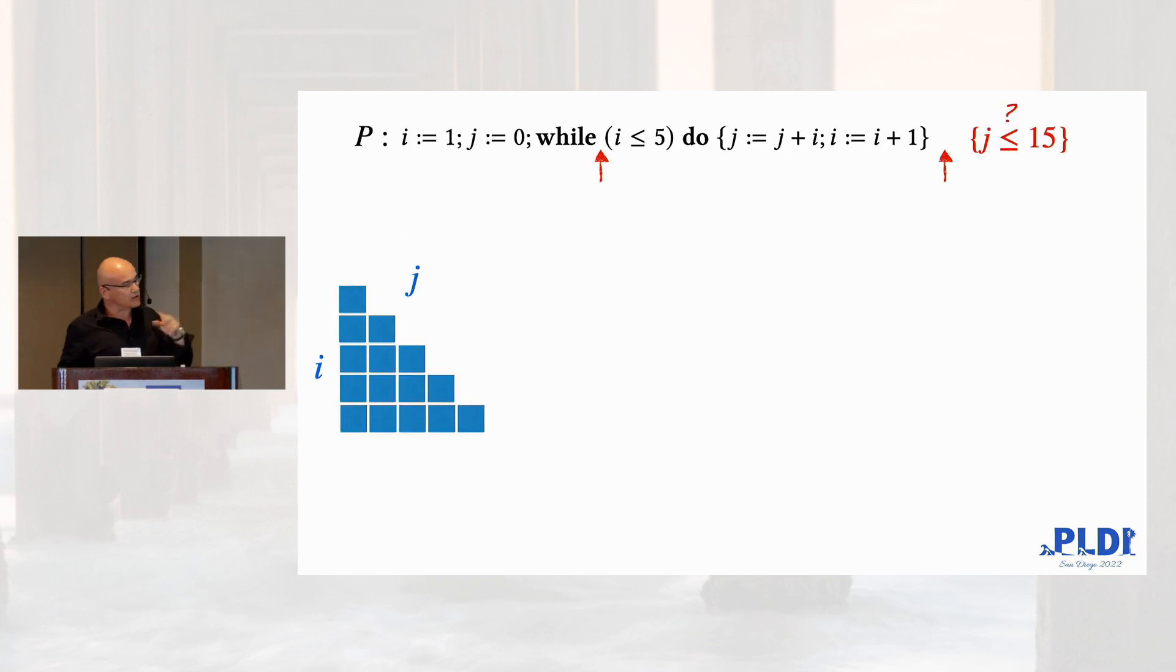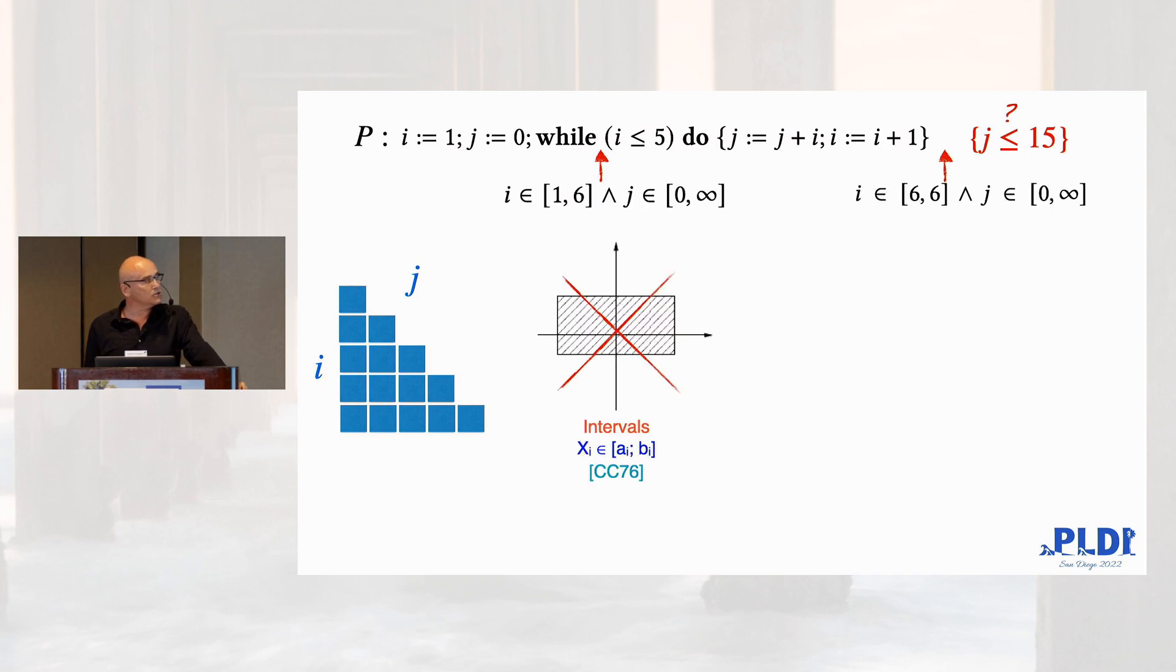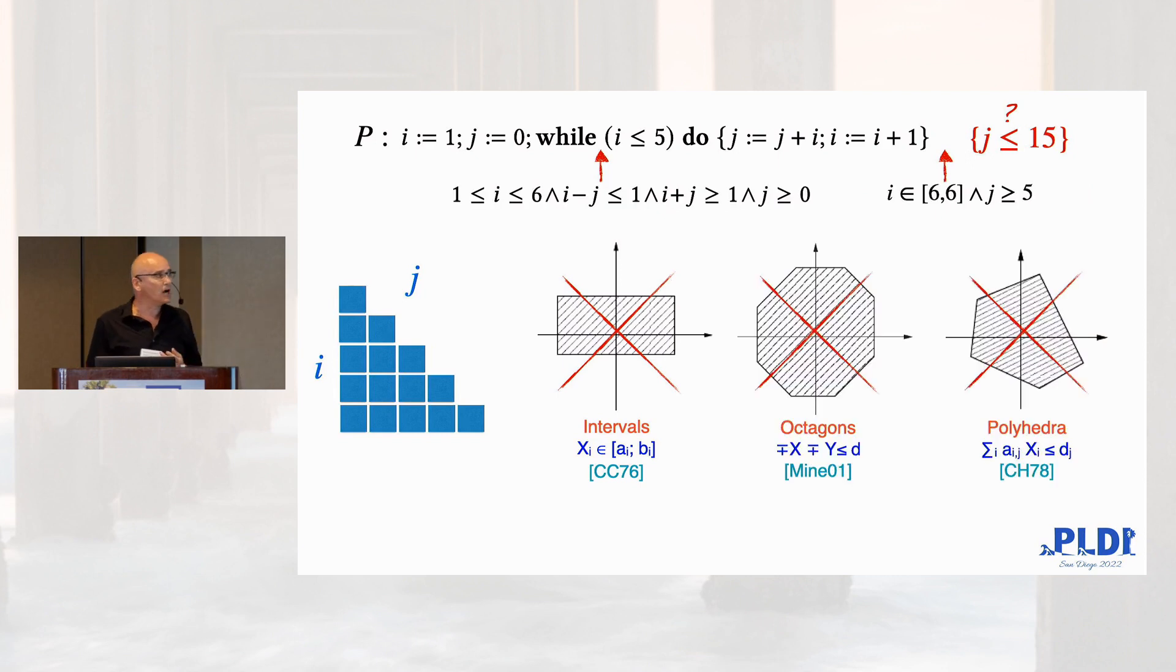Take this program. This program computes triangular numbers. Well, these are not linear. And imagine that you want to prove the correctness of that program, in particular, that assertion that J is bounded by 15. So, you want to use intervals, which is a pretty cheap domain, efficient domain. You get that invariant and you are unable to prove that J is bound.